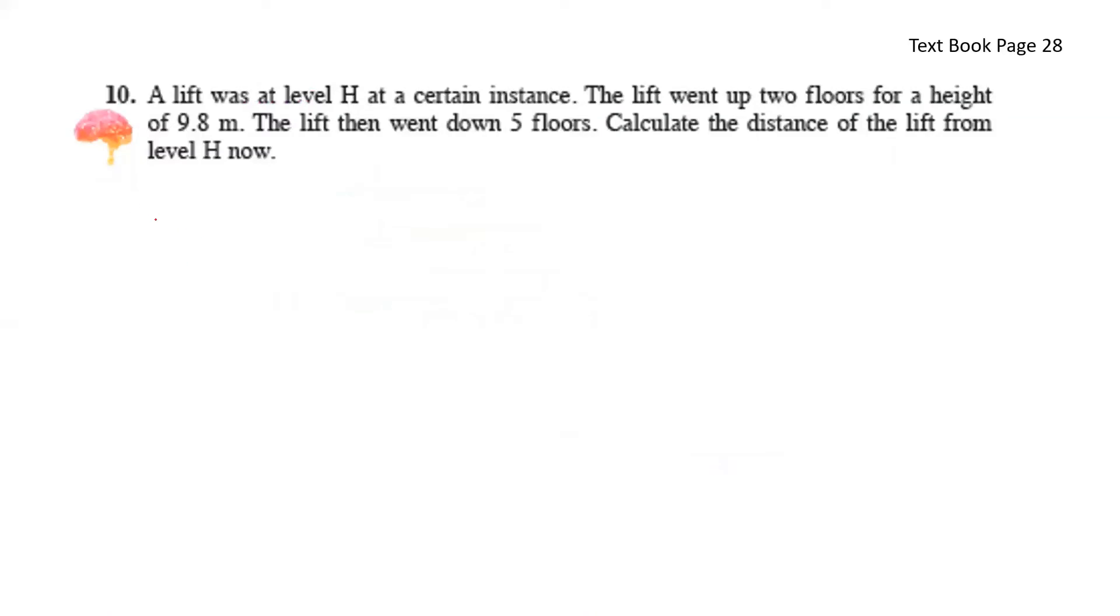A lift was at level H at a certain instance. The lift went up two floors for a height of 9.8 meters. So let's draw that out first. Here is H. It goes up two floors. And both of it is 9.8 meters. It moves up.